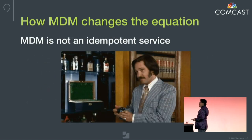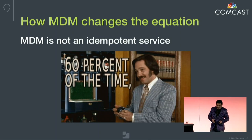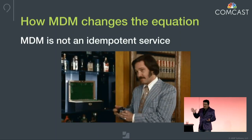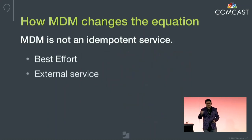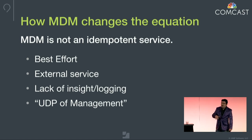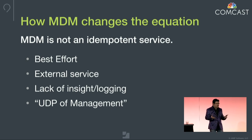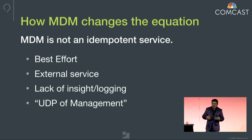It's important for us to manage that. The problem is MDM is not an idempotent circumstance. Apple themselves has said that APNS — the backbone of MDM — is a best-effort service, which means they're not guaranteeing that things arrive when you send them out. APNS is also an external service, and there is a lack of easy logging and insight into the whole process that makes our lives more difficult.